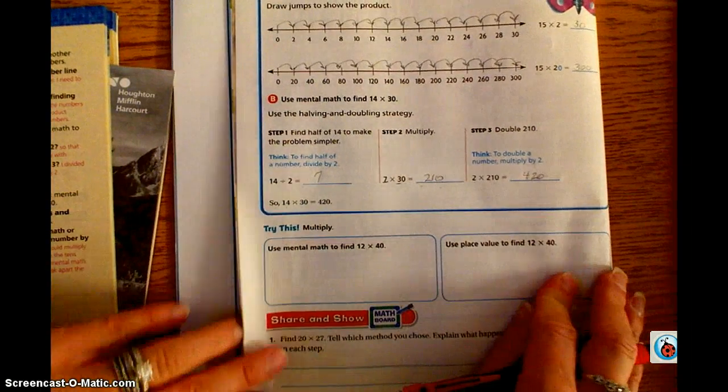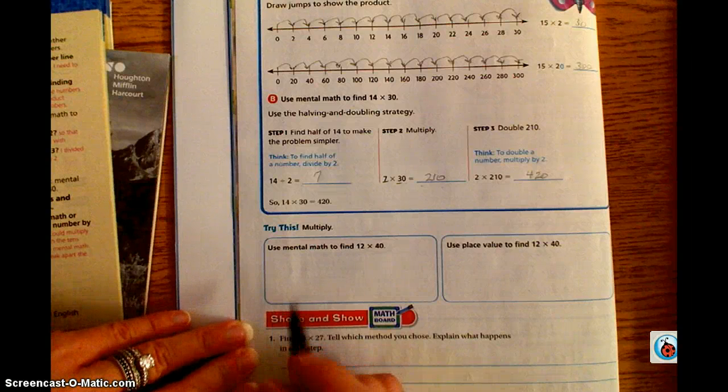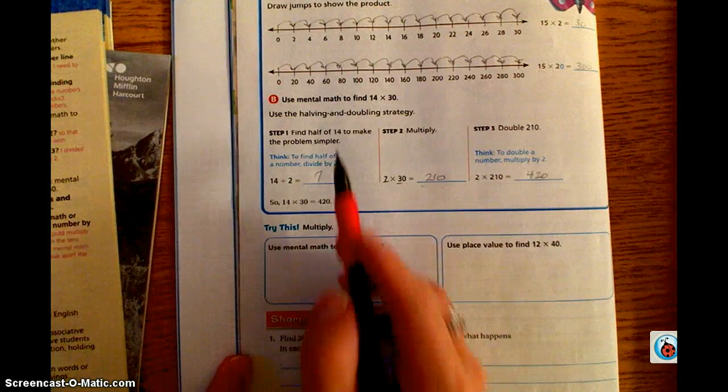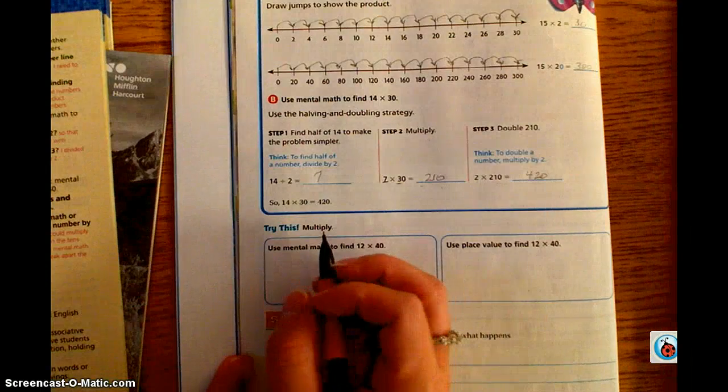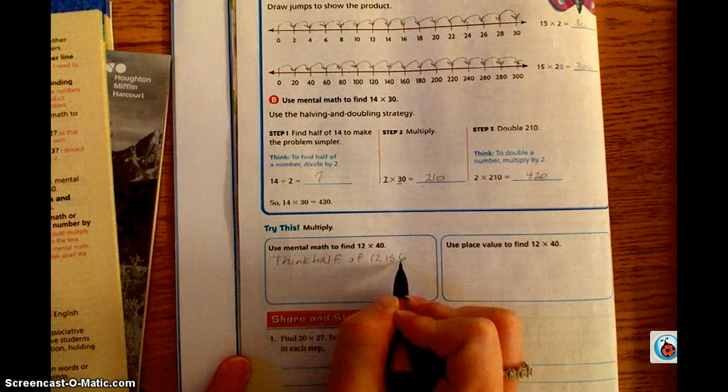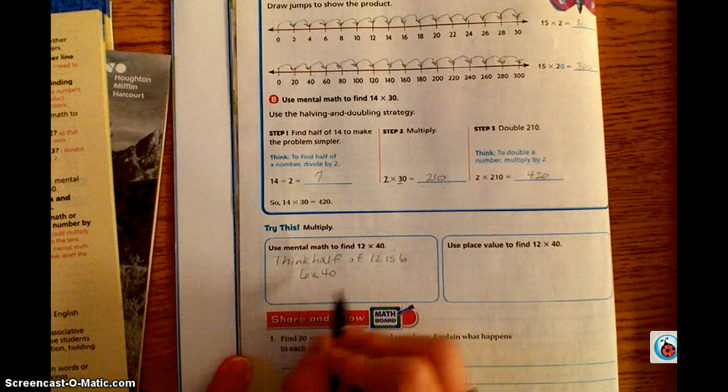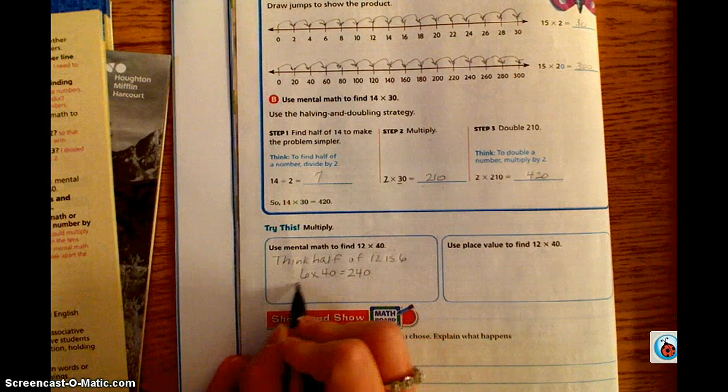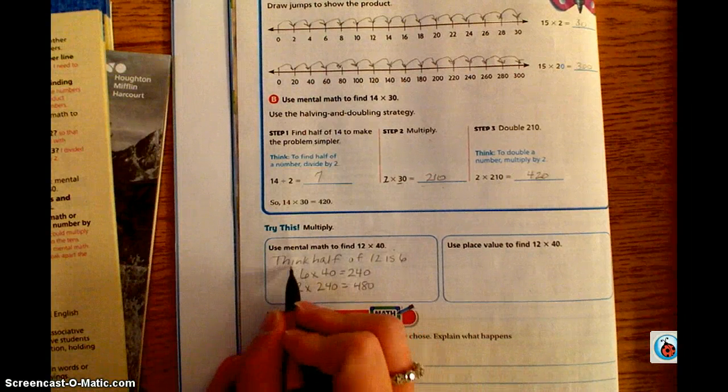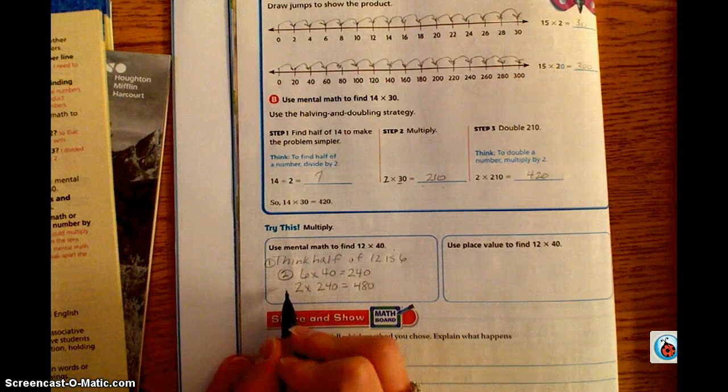The last step of our lesson today is the try this multiply. I'm going to do this with you before I send you off to do the share and show. It says use mental math to find 12 times 40. They want you to do the halve, multiply, double. We're going to first think half of 12 is 6. Then we're going to take 6 times 40, and we know that 6 times 40 equals 240. Then we're going to take 2 times 240, which equals 480. Step 1 is to halve, step 2 is to multiply, and step 3 is to double.